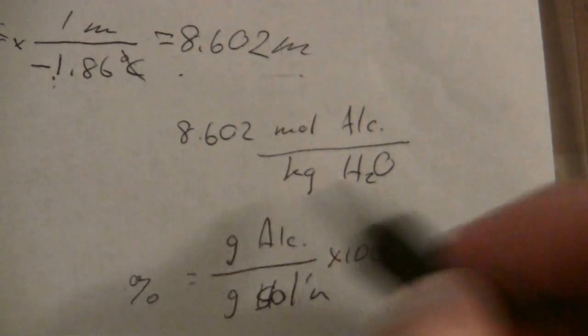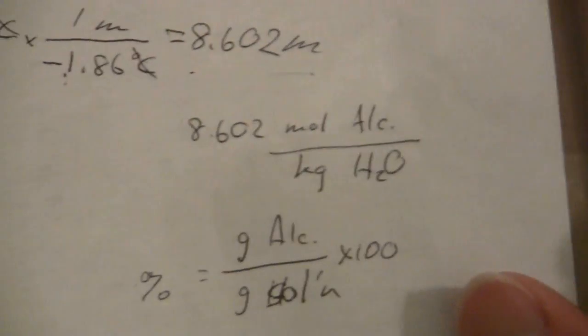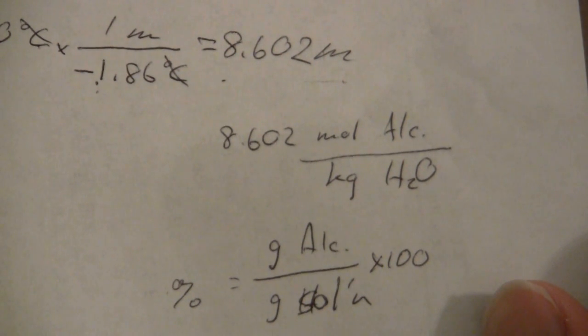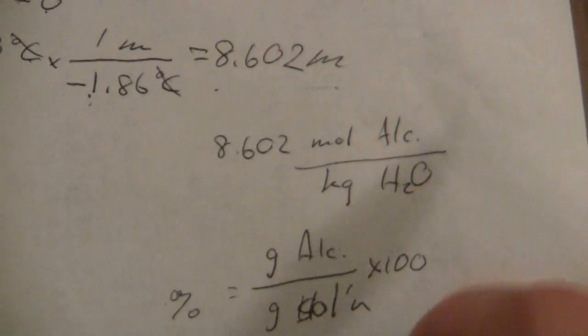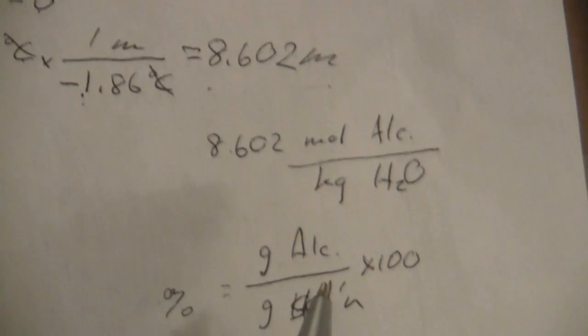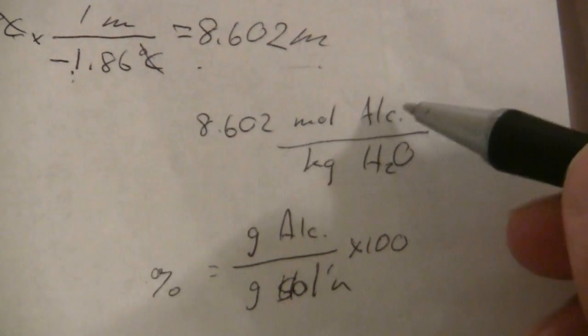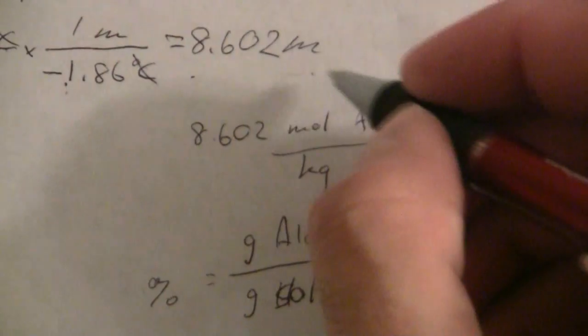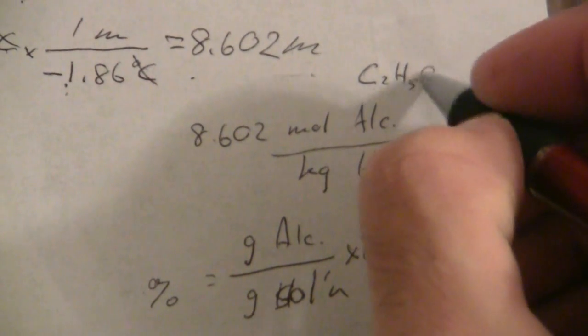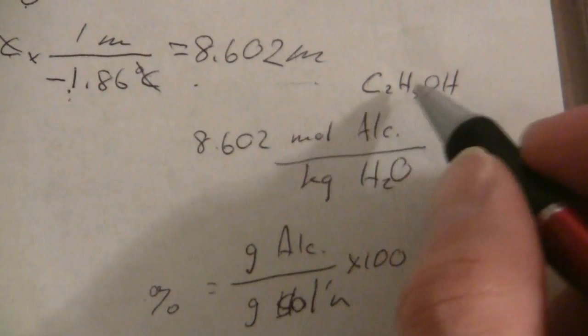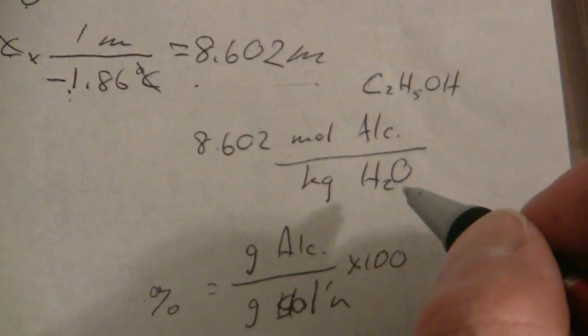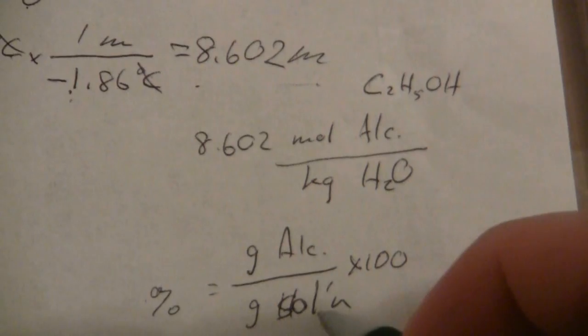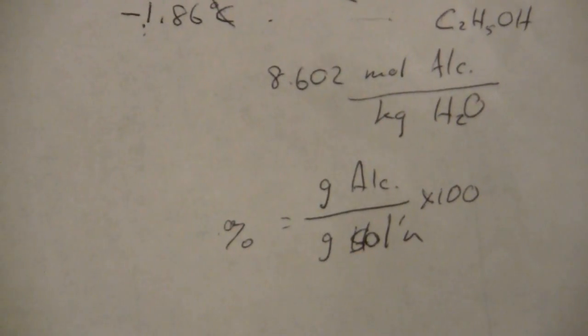That's my mass percent, that's how I find it. So what I need to do is find the mass of the solution. Here we have moles of the alcohol, which was ethanol, C2H5OH. So I can find the mass of alcohol per kilogram of water, and then from that I can get the mass of the solution. Let's work this through.